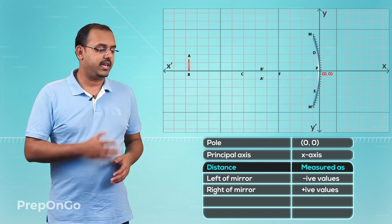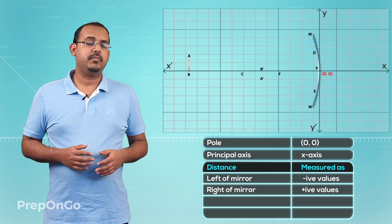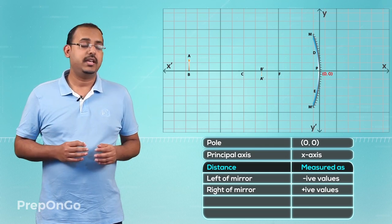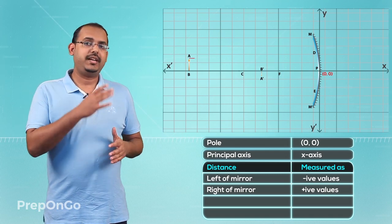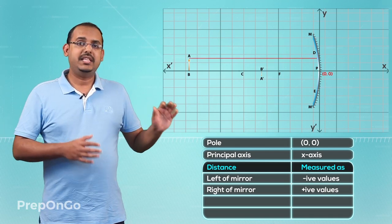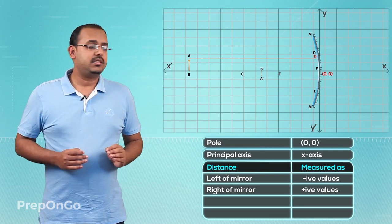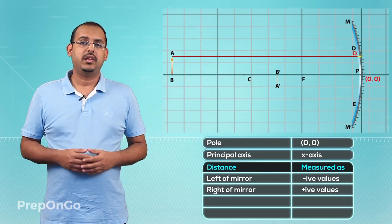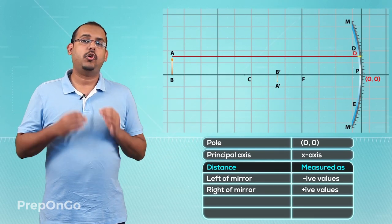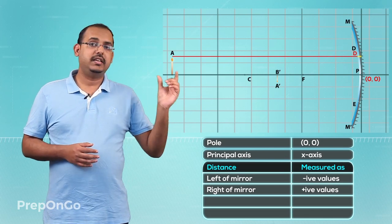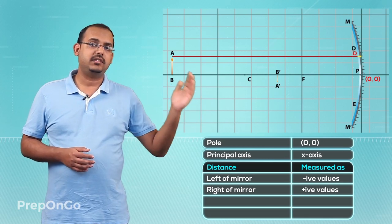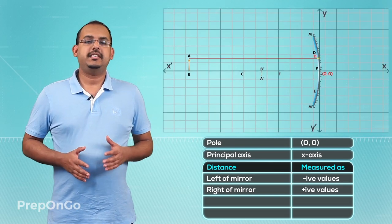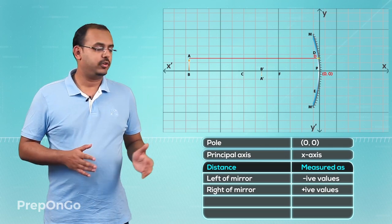For instance, if we have an object AB in this ray diagram where A marks the top of the object, if we draw a ray of light parallel to the principal axis from point A to meet the mirror at point D, the distance between point D and the y axis is considered to be negligible. So the distance AD is always measured from the y axis, because the distance from the y axis to point D is considered negligible. All vertical distances we measure are always measured according to the y axis.